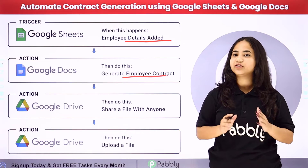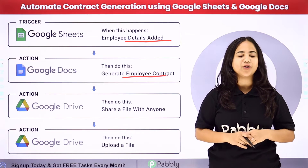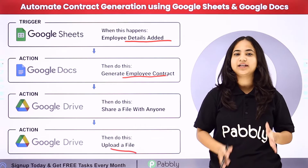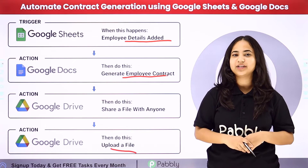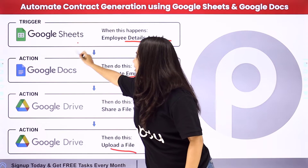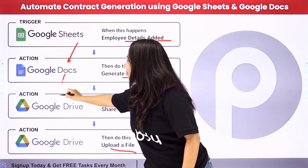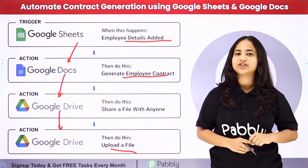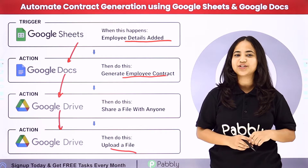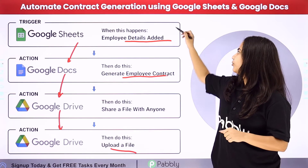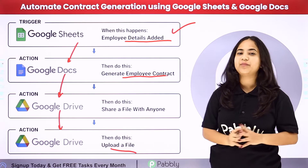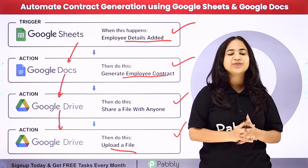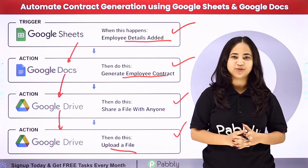And that employee contract which is generated in Google Docs, I want to upload the file in my Google Drive. For that, I am simply going to create a connection between Google Sheets, Google Docs, and Google Drive. Pabbly Connect works on two principles: first is trigger and second is action. My trigger application is Google Sheets and my action applications are Google Docs and Google Drive.